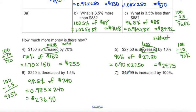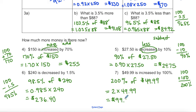And last example, $49.99 is increased by 100%. So I'm starting with my original amount, which is 100, but I'm increasing it by another 100. So I'm actually needing to find 200% of $49.99. So that's the same as finding 2 or multiplying 2 times $49.99. And 2 times $49.99 is $99.98.